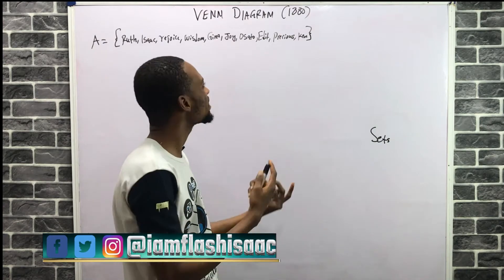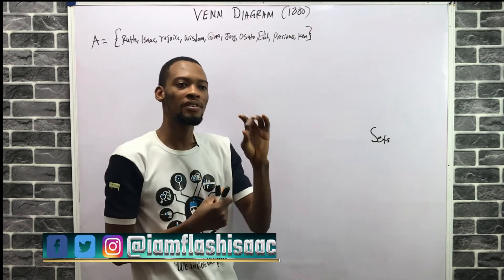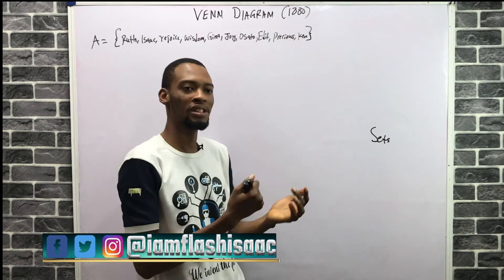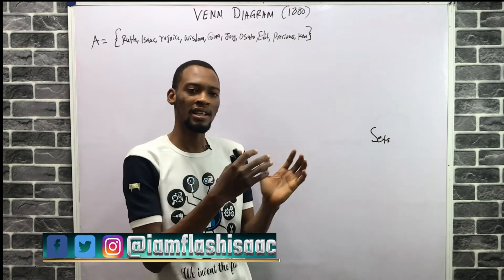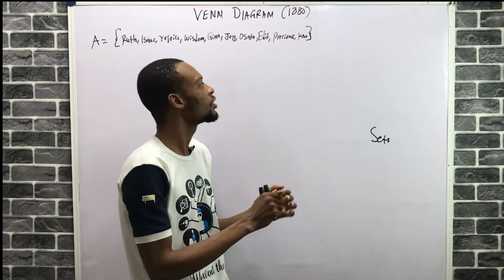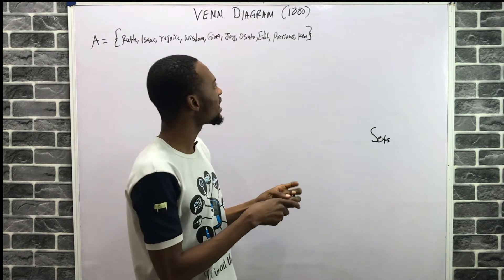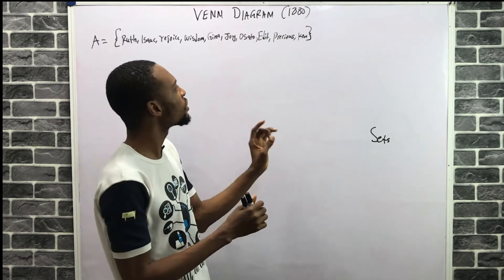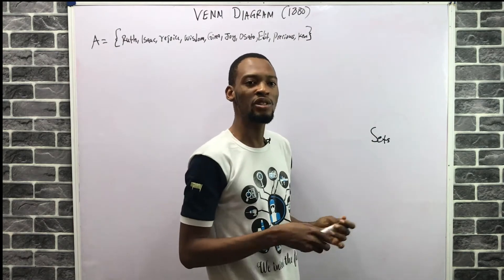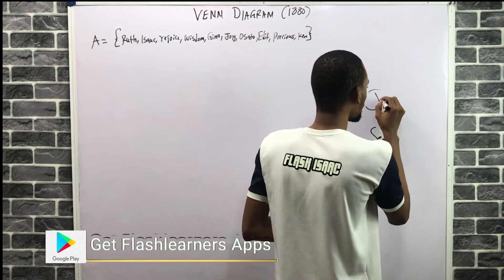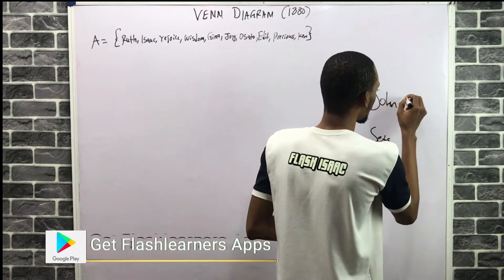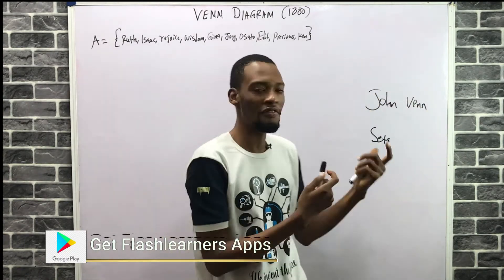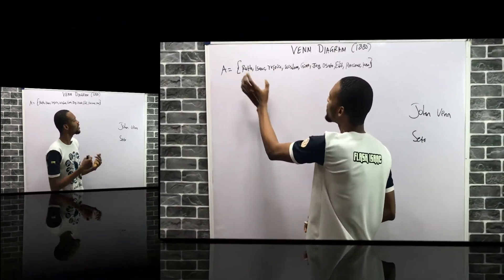A set is a well-defined collection of distinct objects, so the collection must be defined and the elements in a set cannot be the same. A Venn diagram is a diagram used to represent sets, and it was proposed in 1880 by John Venn. The name was gotten from his own name — Venn diagram.